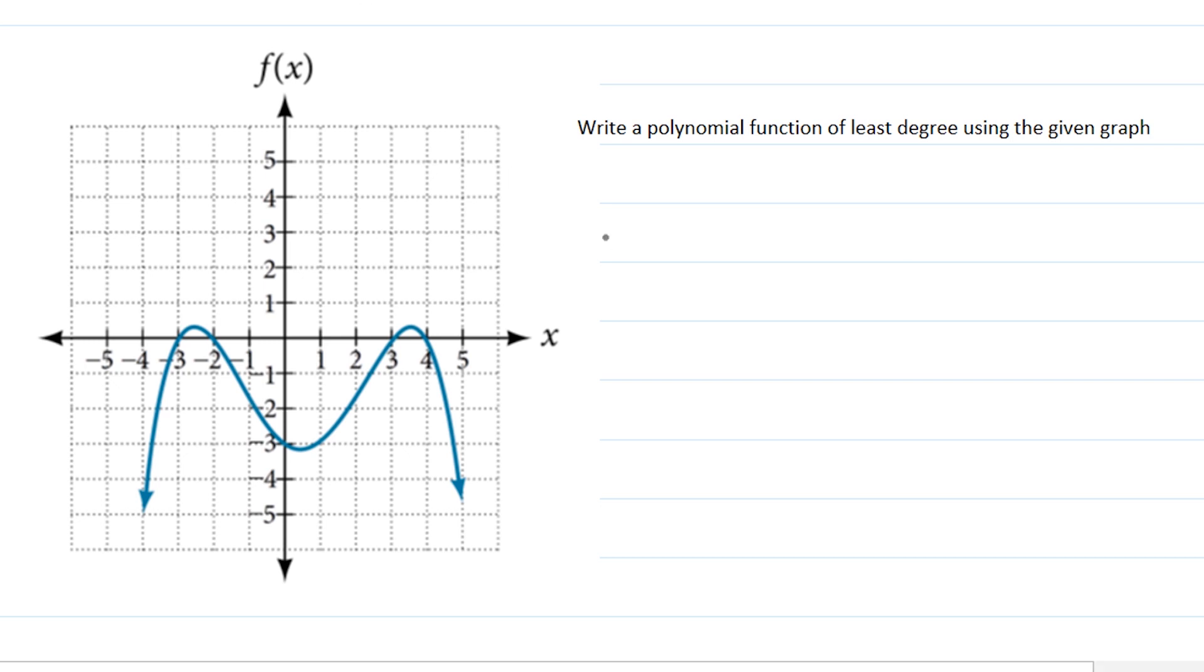The things that we need to consider here are: First, what is the degree? By looking, the turning points are... we have one turning point here, another here, and another here. So we have three turning points. Remember the concept about turning points? At most n minus one. So the degree is four. And the end behaviors are both going down. We only have the same end behavior when our degree is even. So our degree is four.